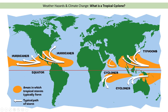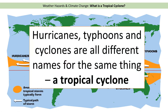We've got different names for tropical cyclones. We call them hurricanes if they hit the Caribbean, USA, or Mexico — anywhere in the Atlantic Ocean. If they hit anywhere in the Indian Ocean they're normally called cyclones, and when they hit East Asia they're normally called typhoons. But please don't be confused — hurricane, typhoon, cyclone, they're all the same thing; they're just different names and they're all a tropical cyclone.